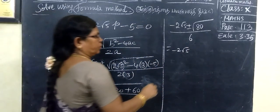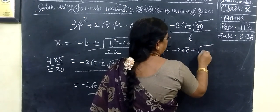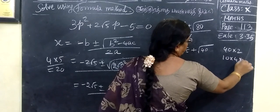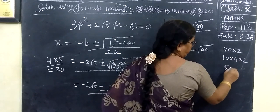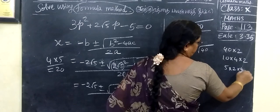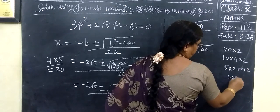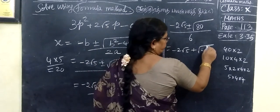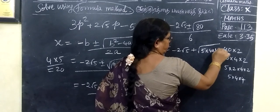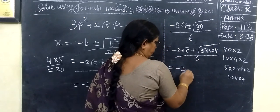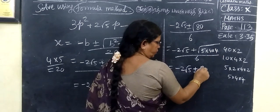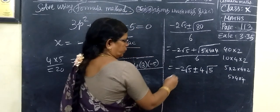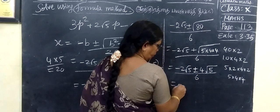Equal to minus 2 root 5. This is 40 into 2. Then 40 is 10 into 4 into 2. This is 5 into 2, then 4 into 2. So, 5 into 4 into 4. This is correct. Here, 5 into 4 into 4 by 6. So, minus 2 root 5 plus or minus: 2 times 4 equals 1 — wait, 4 is equal to 4. This is up to 6, and then by 6.